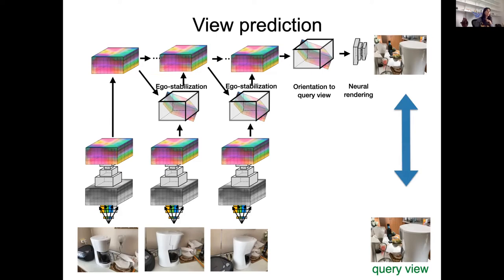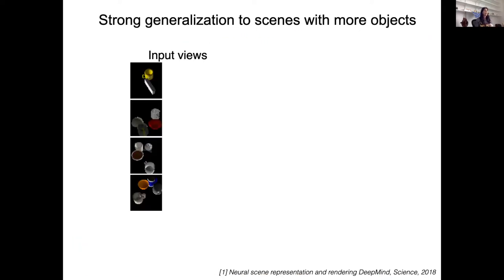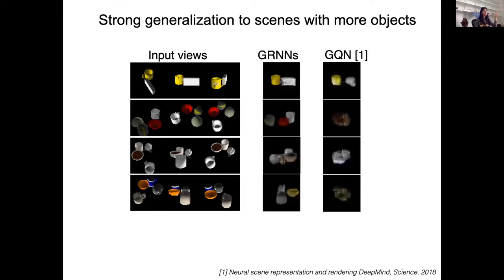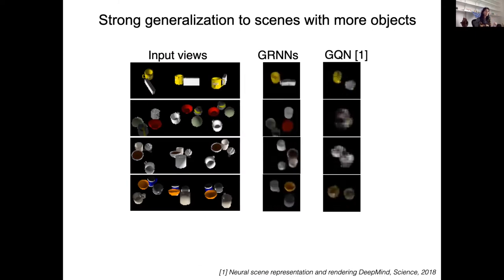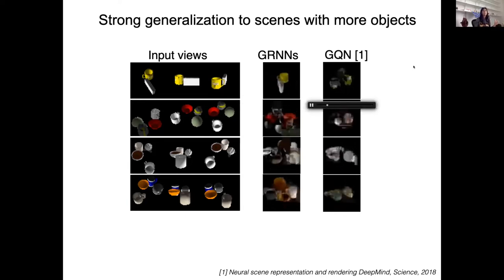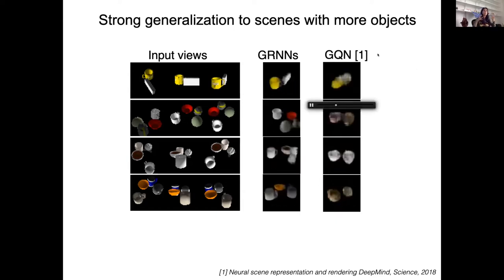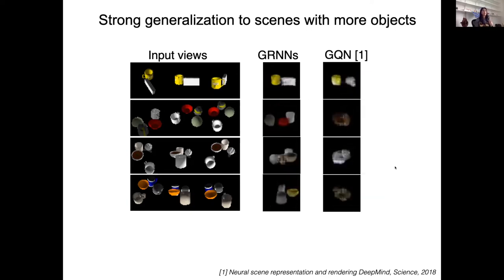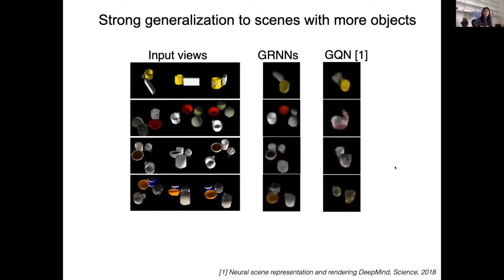Going through that explicit 3D-dimensional bottleneck gives benefits in practice regarding generalization, as opposed to staying in 2D or squeezing the whole scene into 1D or 2D vectors. You can train the network on two objects without even depth, just from images, and then test it on four objects — and the network actually generalizes. A network trained with view prediction but without an explicit 3D bottleneck still imagines only two objects, so it is not able to do the reasonable generalization that humans do easily.